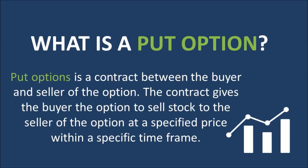A put option is a contract between the buyer and the seller of the option. The contract gives the buyer the option to sell stock to the seller at a specific price within a specific time frame, so the buyer can choose whether they want to sell the stock or not.